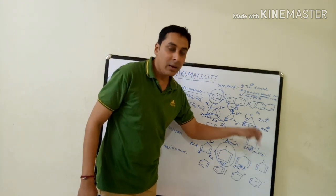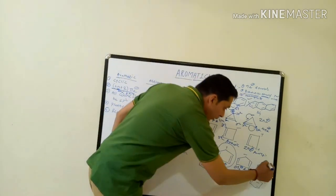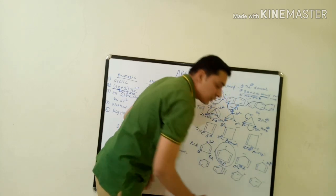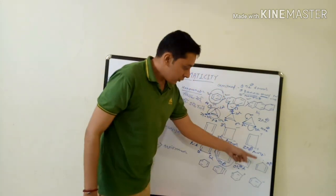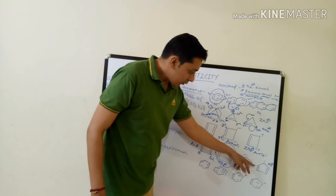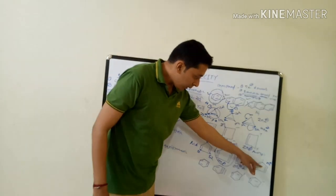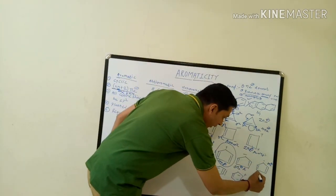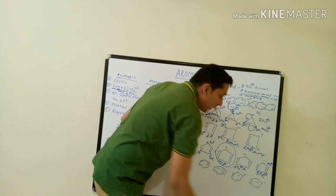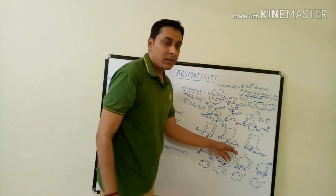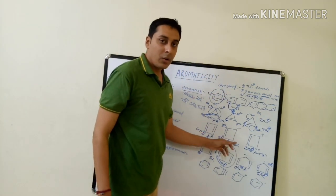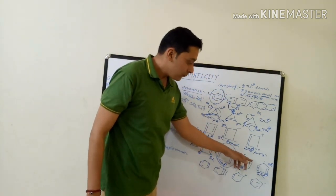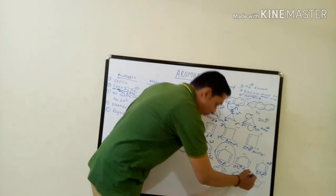The next example involves a free radical on the five-membered ring. A free radical contributes one pi electron. So the count is: two pi electrons, two pi electrons, and one pi electron from the radical — total five pi electrons. Five is neither 4n+2 nor 4n, so the compound is not aromatic, not anti-aromatic — it is non-aromatic.